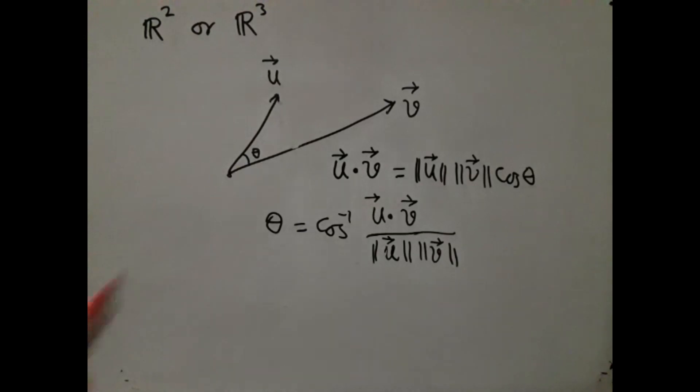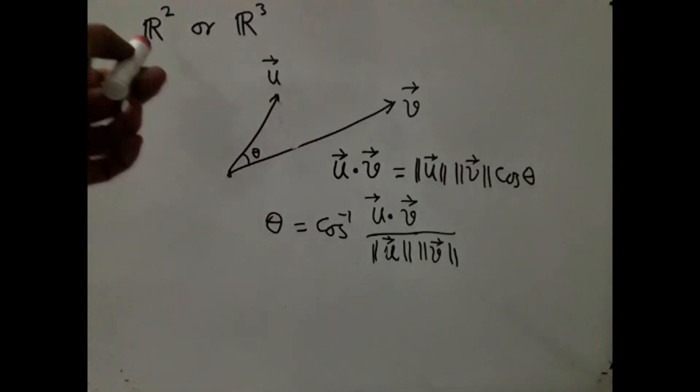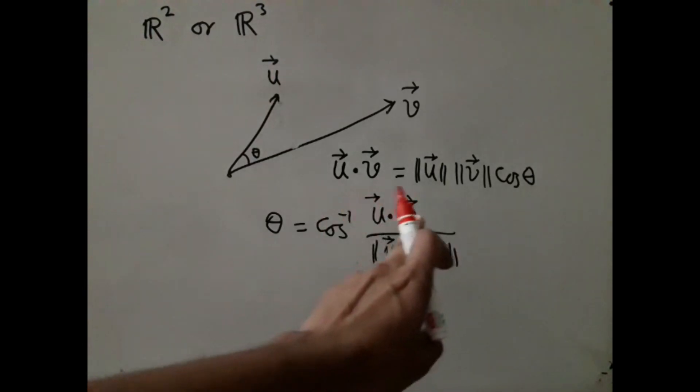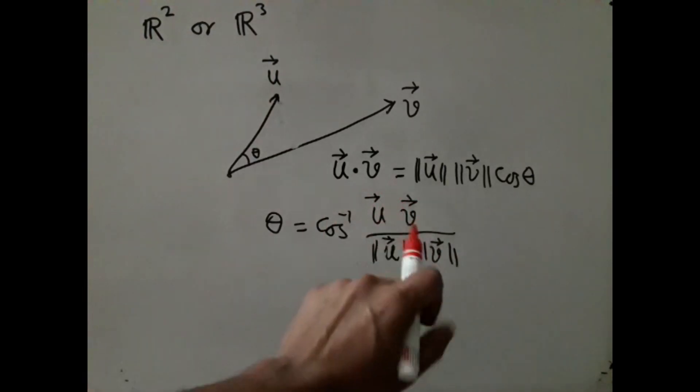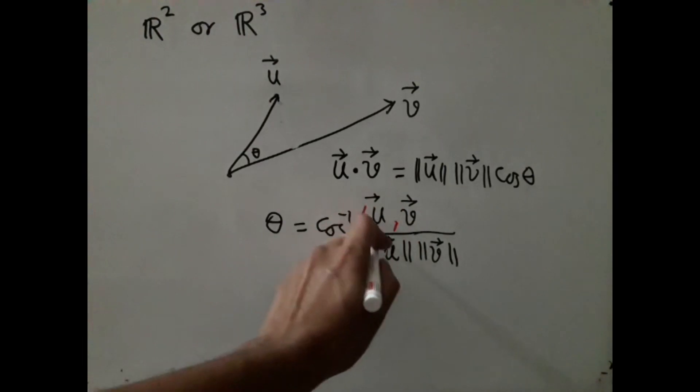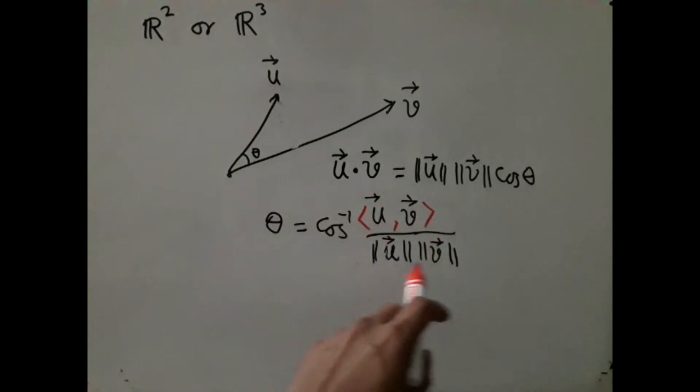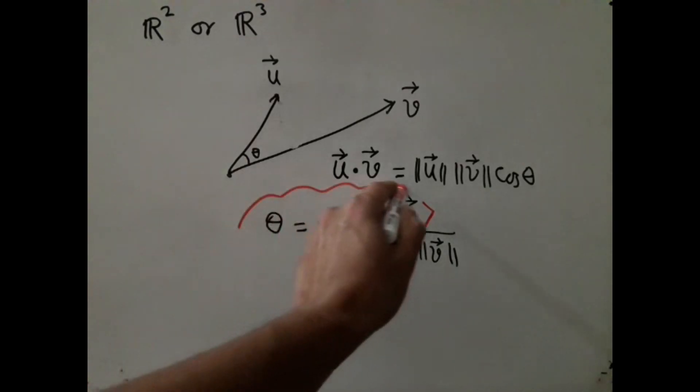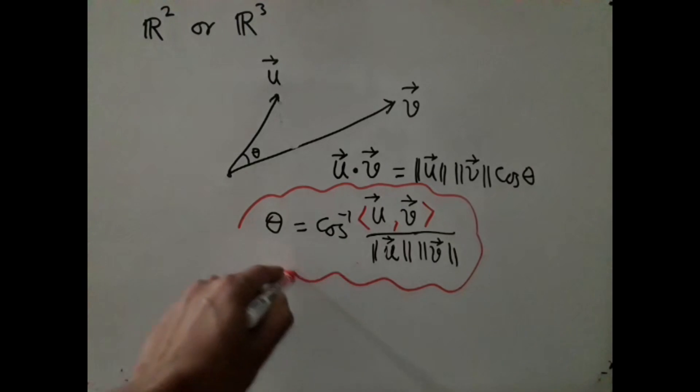Now, our plan is to use this relationship to generalize the concept of angles, to define angles for even other inner product spaces, not just R^2 and R^3. We know how to generalize dot product to inner product, and once we have inner products, we can define norm in terms of that inner product. So this is the dream that we have to define angles in other inner product spaces.